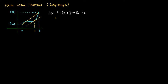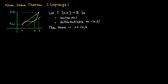More precisely: let f be a function defined on an interval such that it is continuous and differentiable on the open interval (a, b). Then there exists a c in (a, b) such that the slope of the tangent line — given by the derivative f'(c) — equals the slope of the yellow line segment, which is given by f(b) minus f(a) divided by b minus a.